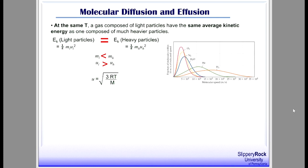A plot showing the distribution of molecular speeds of several gases at 25°C illustrates this. Going from left to right, the mass of each gas decreases in the order: molecular oxygen, nitrogen, water vapor, helium, and hydrogen. On the contrary, the RMS speed increases. This is evidence that as gas particles become lighter, they move faster.